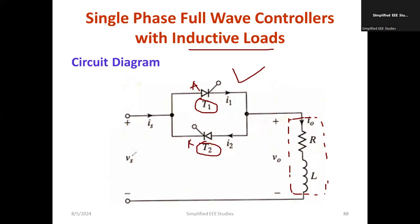Vs represents the supply voltage. Is represents the supply current. I0 represents the output current, and V0 is the voltage across the load. These are the basic parameters of this single phase full wave controller with inductive load.